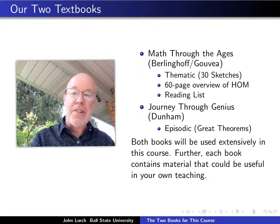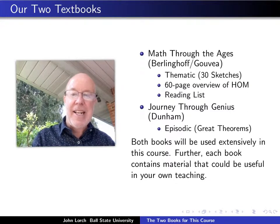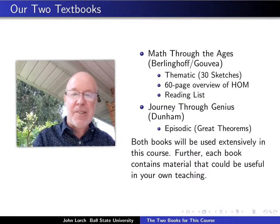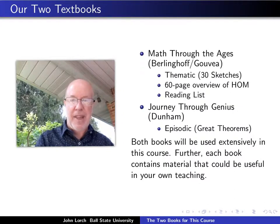The other book, Journey Through Genius, also is not your typical chronologically ordered book. Instead it is organized around some great theorems of mathematics. There are 12 of them discussed in the book, and that amounts to 12 chapters of Journey Through Genius. We will be looking at several chapters of that book.